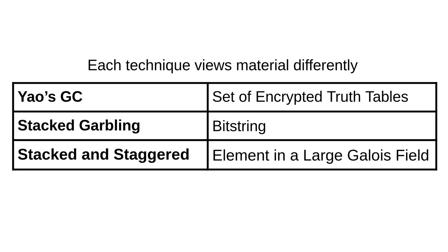Central to our idea is the fact that material is viewed differently in each technique. Traditionally, garbled circuit was viewed as a collection of encrypted truth tables. The key idea of stack garbling was that the material should instead be viewed as a bit string, enabling management of materials using natural operations such as bitwise XOR to reduce communication. We take this idea further and view the material as an element in a large Galois field. As a result, we can perform linear algebraic operations on the material, which will help us reduce the computation costs associated with stack garbling.